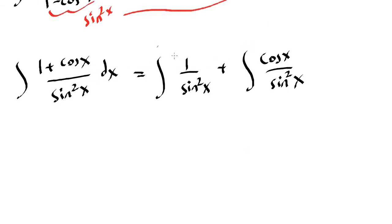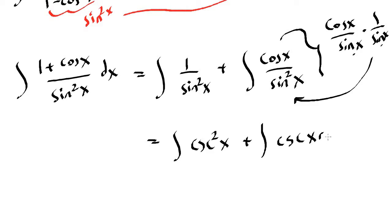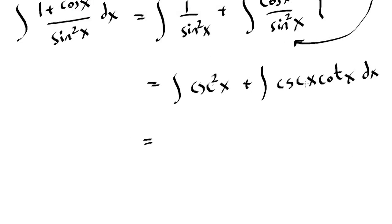Using the reciprocal identities, 1 over sine squared of x is cosecant squared of x. For the second term, cosine x over sine squared of x can be written as cosine x over sine x times 1 over sine x — and cosine over sine is cotangent, and 1 over sine is cosecant. So the second term is cosecant x times cotangent x. The final answer is negative cotangent x minus cosecant x plus C.